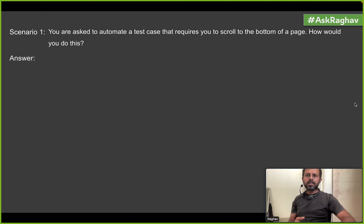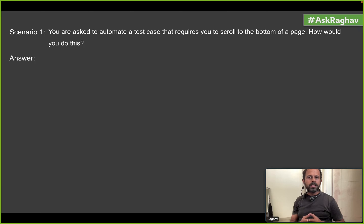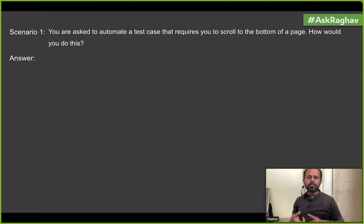The first scenario: you are asked to automate a test case that requires you to scroll to the bottom of a page. How would you do this? In Selenium we have multiple ways you can scroll to a particular element.